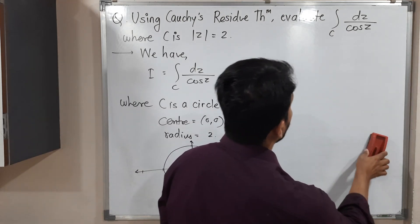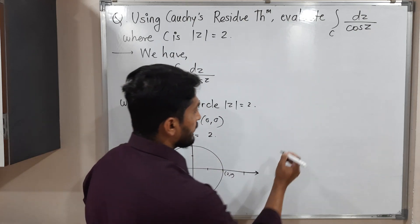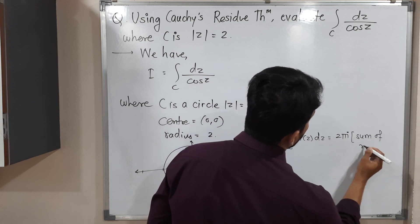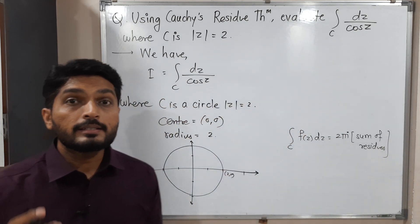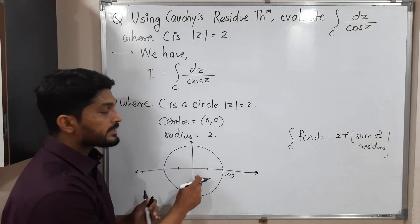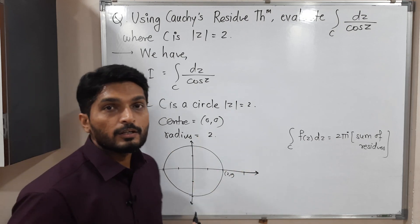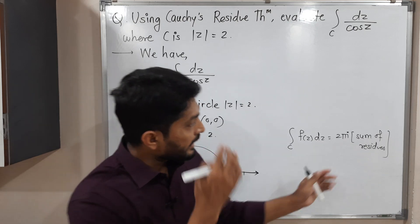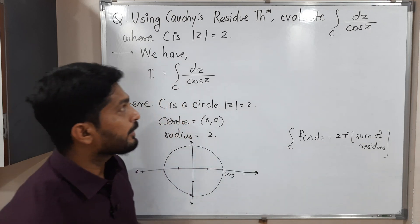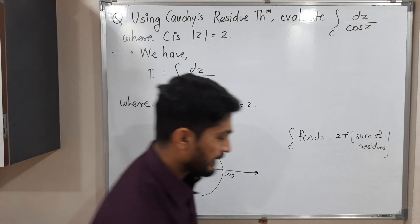With the help of Cauchy's residue theorem we have to find the value of this integration. That theorem says integration over C of f(z) dz is equal to 2πi times the sum of residues. First we find singular points of f(z), check whether they lie inside or outside the circle, then find residues at the poles inside the circle, take their sum and multiply by 2πi.